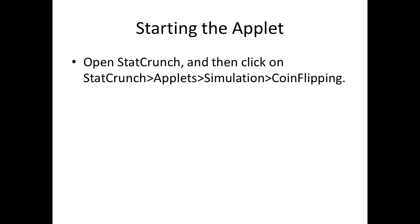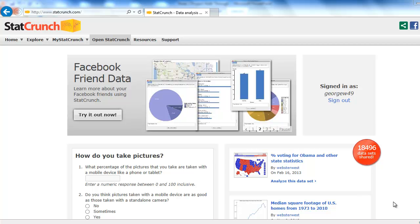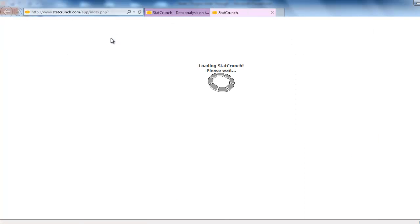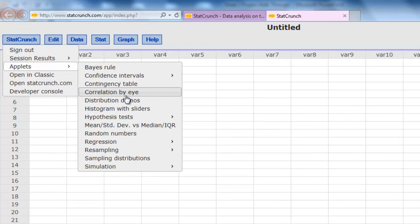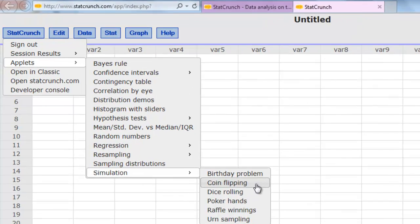To start the applet, you want to click on Open StatCrunch, and then click on the StatCrunch button, Applets, Simulation, Coin Flipping. Alright, here we are in StatCrunch. I'm going to show you how to open the applet first. We click on Open StatCrunch, and the spreadsheet will show up. Then I want you to click on StatCrunch, Applets, Simulation, Coin Flipping.